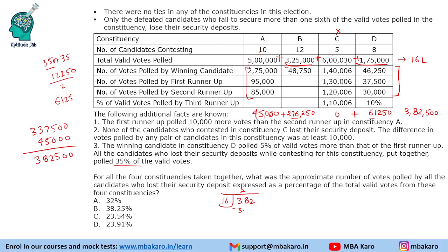Dividing 382 by 16: 16 times 2 is 32, giving roughly 23.91%. So the answer is approximately 23.91% — close to 24%. This was the solution to the set. It was a quite calculation-intensive and information-intensive set, and ideally should not have been the first set attempted in the examination.